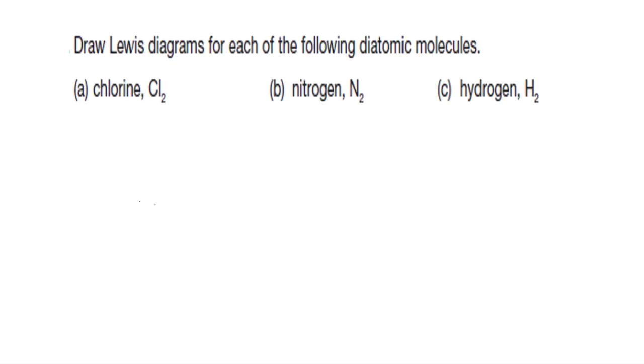Last little bit of practice here. Again, I'll do one, you do the remaining two. I'm going to do nitrogen gas, which is N2. I'm going to start off by drawing my two nitrogen symbols. They are both nitrogen, so they're both in group 15, meaning they have five valence electrons. So one, two, three, four, five. One, two, three, four, and five.